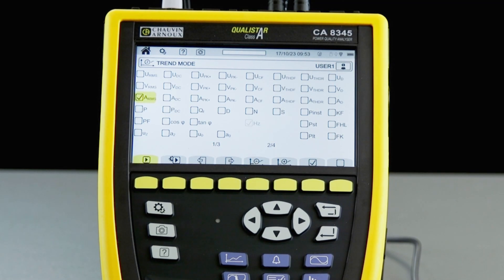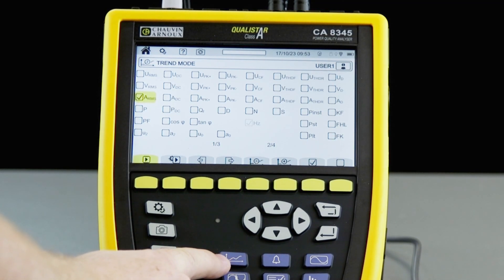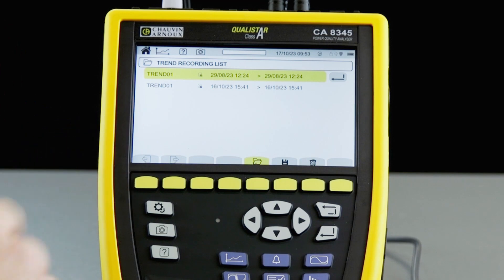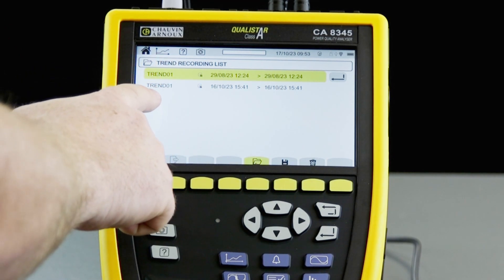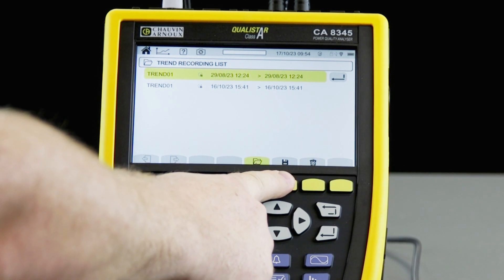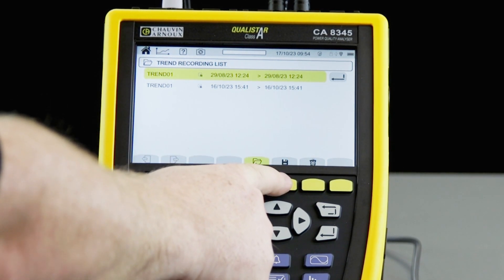then we go into the trend recording mode. So this is using the blue function key here. When we're in this mode, we can see a list of trends that have already been recorded. And to start a new trend recording session, we select the key next to the disk icon.